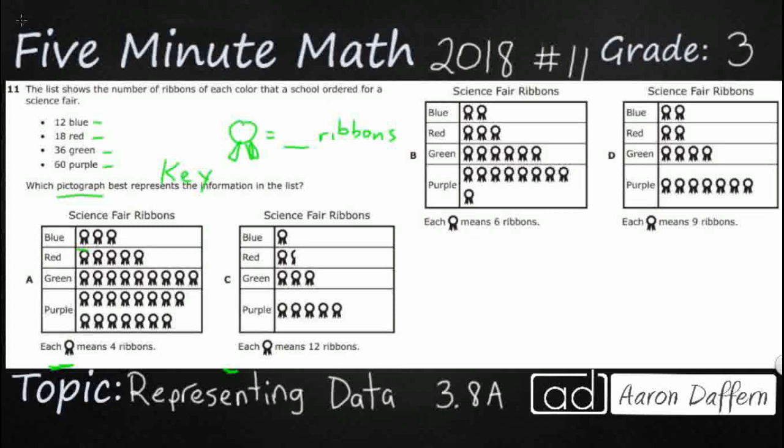So let's take a look at this first one. Each of these has a different key. So A wants us to have four ribbons, C wants us to have 12 ribbons for each, B has got six ribbons for each, and then D has got nine ribbons for each. We're going to do a little bit of work to make this happen.